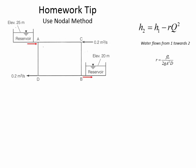The tools we're going to use in solving this problem are the continuity equation — because at each junction the flow in has to equal the flow out — and the energy loss equation. This is the same rearranged energy equation from the nodal method, except we've replaced FL divided by 2GA²D with just the variable R.